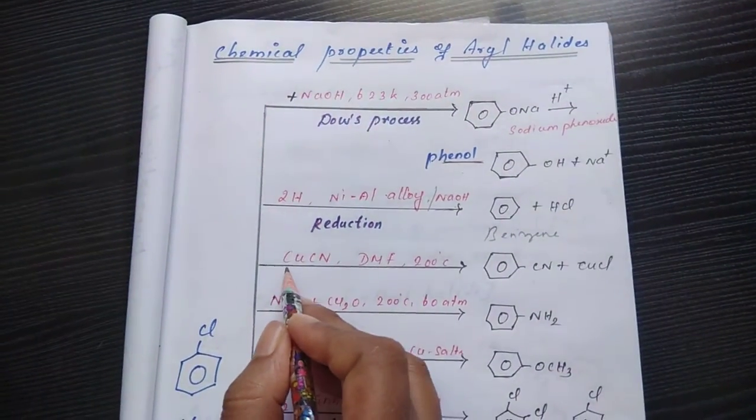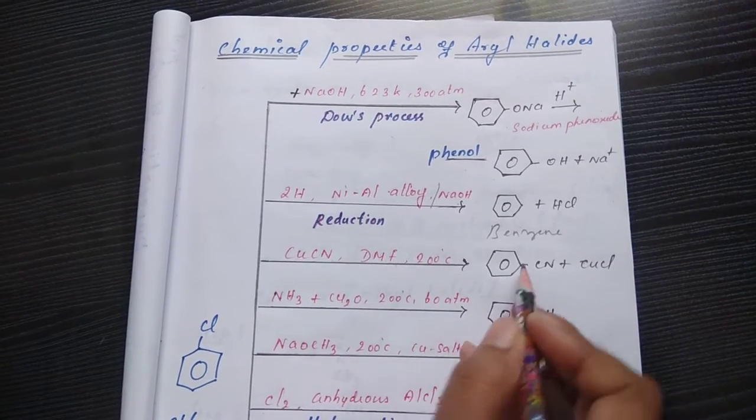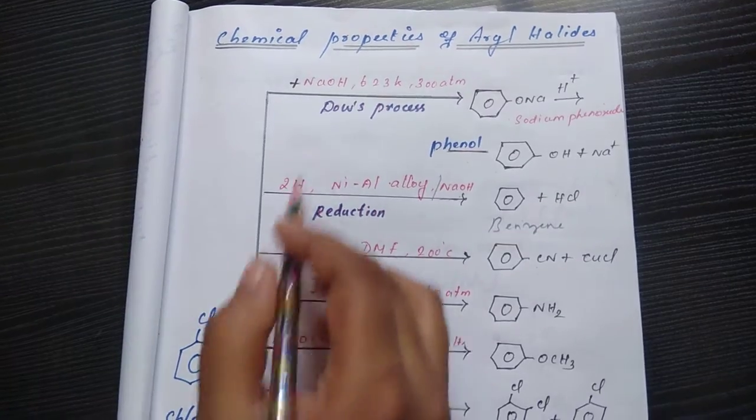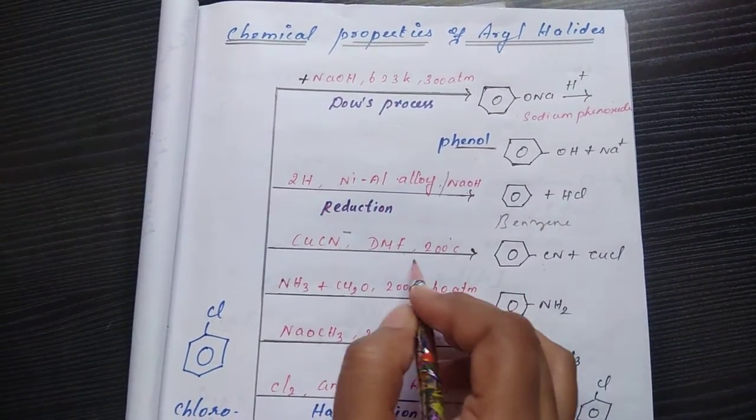Then if I go with CuCN, DMF at 200 degree Celsius, we get cyanobenzene. These are all nucleophilic substitutions. Here cyano group is substituted under this particular conditions only.